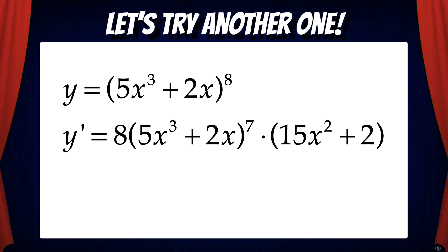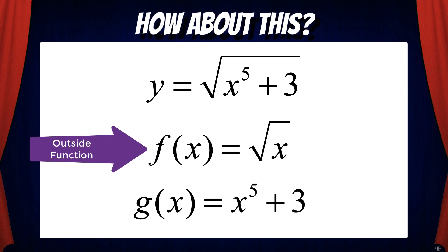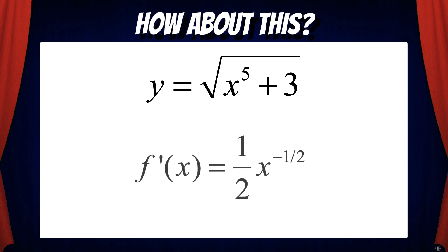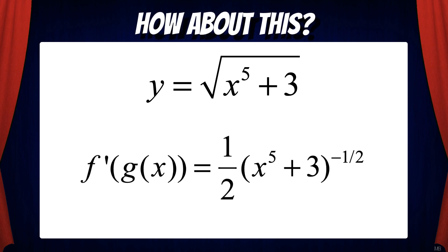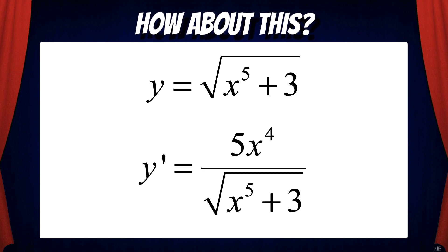Now we have the derivative of y. What if we had a function like this: y equals the square root of x to the 5th plus 3? We have an outside function — radical x — and an inside function — x to the 5th plus 3. We first take the derivative of the outer function, which gives us 1/2 times x to the negative 1/2. But we replace the x with the inner function, which is x to the 5th plus 3. Then we multiply by the derivative of the inside function, which is 5x to the 4th. Simplifying, y prime equals 5x to the 4th divided by the square root of x to the 5th plus 3.